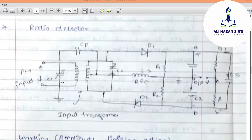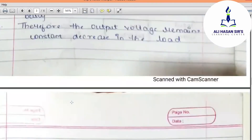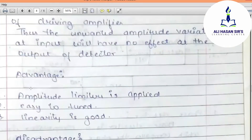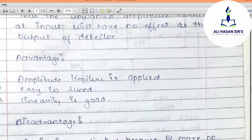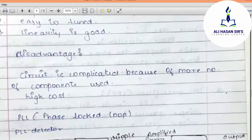This is the important part: how amplitude limiting action takes place with the help of the ratio detector circuit. The advantage is that amplitude limiting is built in. The disadvantage is that it is complicated because of the larger number of components used.